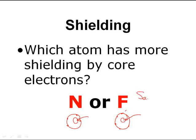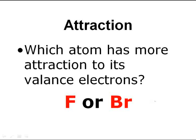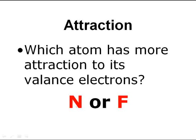Which atom has more attraction to its valence electrons — nitrogen or fluorine? Fluorine is going to be the one with more attraction to its outer electrons, mainly because it's a smaller atom. The smaller you are, the closer your nucleus is to your valence electrons. Which atom has more attraction to its valence electrons going across a period? Nitrogen is farther to the left than fluorine, therefore it's larger. Smaller atoms have their protons closer to the outer valence electrons — stronger attraction. So fluorine wins again.